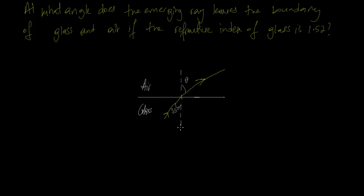We have our perpendicular normal, which is an imaginary line that is drawn perpendicular to the surface or to the boundary. And we have a ray that is traveling from glass to air, so it is traveling in the glass and it strikes the boundary at an angle of 35 degrees to the normal, and then it emerges.